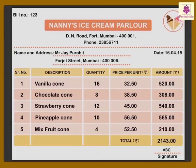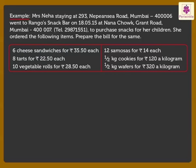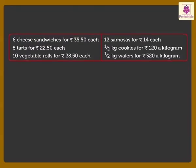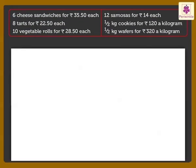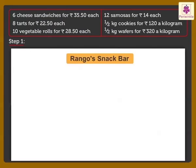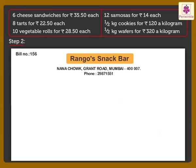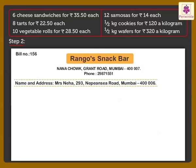Now, let us learn how to prepare a bill from the given information. Let us systematically prepare the bill. Step 1: Write the service provider's name, address, telephone number, and bill number. Step 2: Write the name and address of the customer.